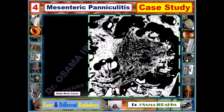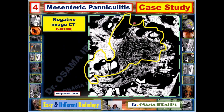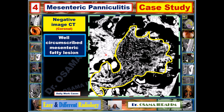I also advise using an inverted CT image, which can clearly discriminate the hyperattenuating fatty lesions from normal mesenteric fat. In this negative or inverted coronal CT image, the fatty lesions are clearly visible and represent a well-circumscribed mesenteric fatty lesion consistent with the diagnosis of mesenteric paniculitis — again from the same case study.